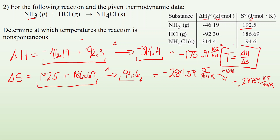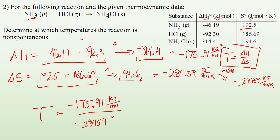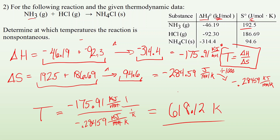Now using the equation T equals delta H divided by delta S: negative 175.91 kilojoules per mole divided by negative 0.28459 kilojoules per mole Kelvin. Kilojoules cancel out, moles cancel out, and we're left with Kelvin — which makes sense since we're solving for temperature. Plugging in gives approximately 618.12 Kelvin, or about 345 degrees Celsius. Either unit should be acceptable, but always include the unit.